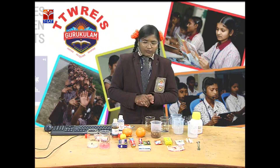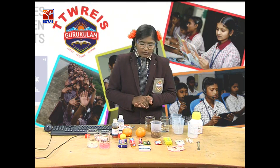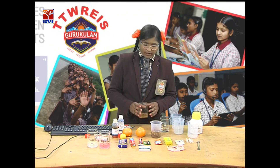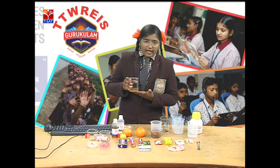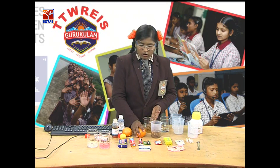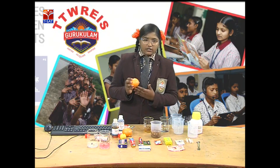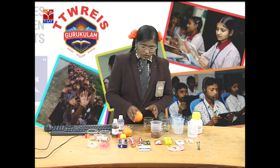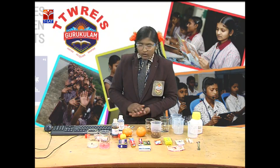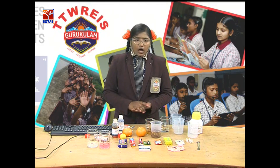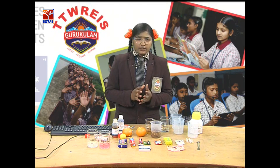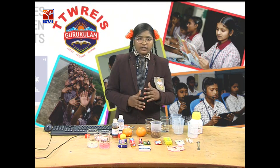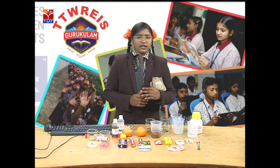Now we have some more examples of acidic substances — tamarind and oranges also contain acidic nature. Now, how can we identify a substance as a base?